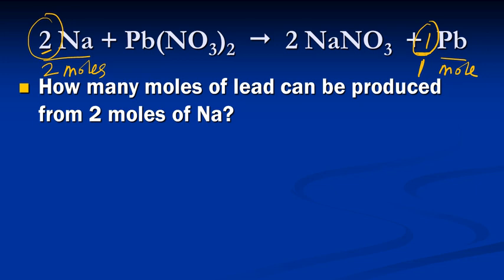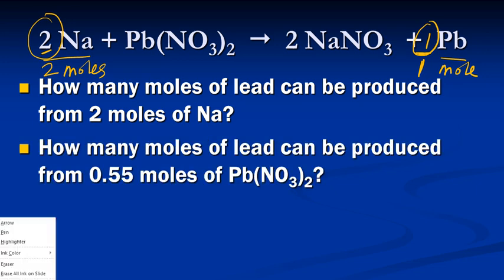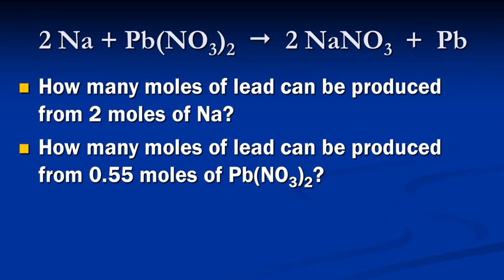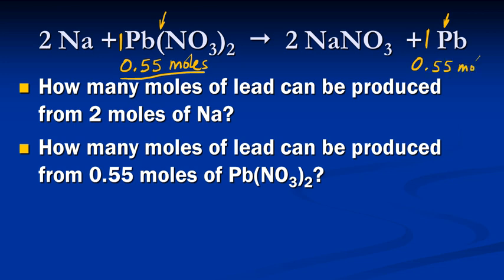Let's try another example. How many moles of lead can be produced from 0.55 moles of lead nitrate, Pb(NO₃)₂? What's the ratio between lead nitrate and lead? The coefficients for both of those are one, so it's a one to one ratio. That means if we have 0.55 moles of lead nitrate, we're going to have 0.55 moles of lead produced.